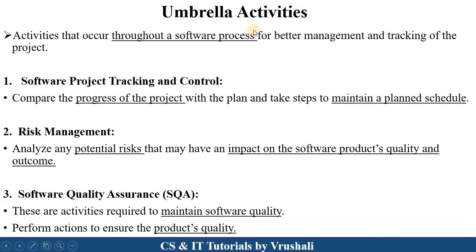The next topic is umbrella activities. Umbrella activities are performed throughout the software process, throughout all process framework activities. The first umbrella activity is software project tracking and control. It means there is a particular person who checks that the project is being developed as per the plan. There is a particular deadline for every project, and it is necessary to complete the product by that deadline.